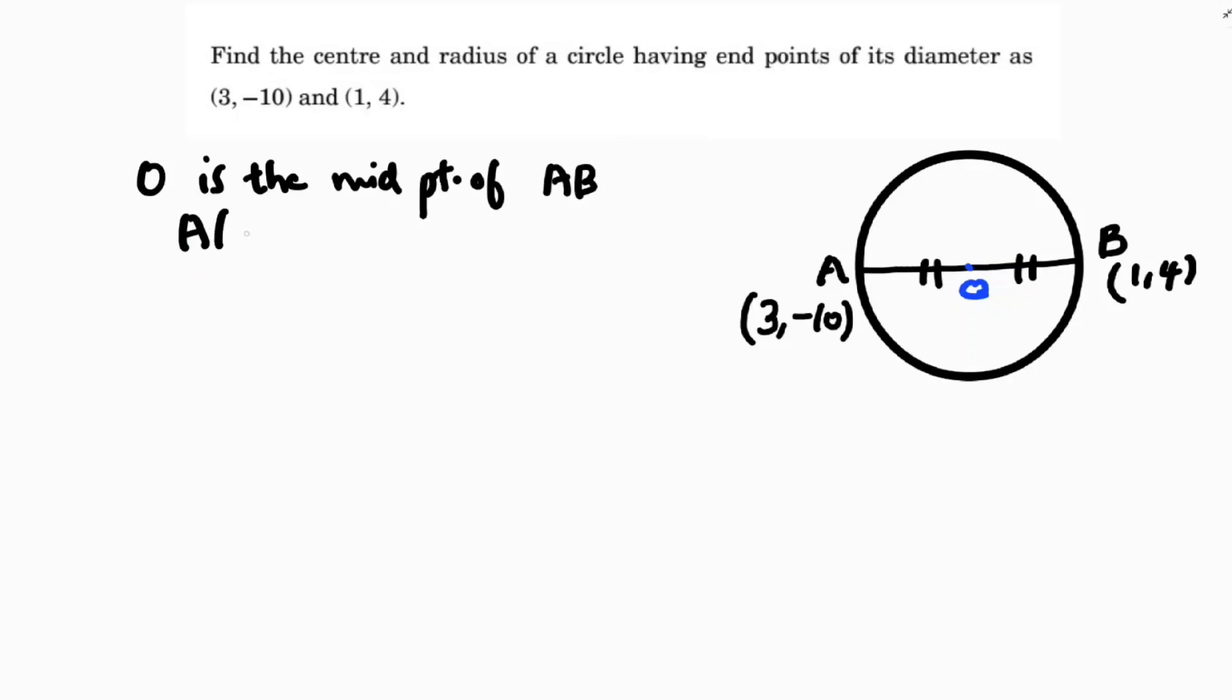So here A is (3, -10), B is (1, 4). So I will consider like x1, y1, x2, y2.